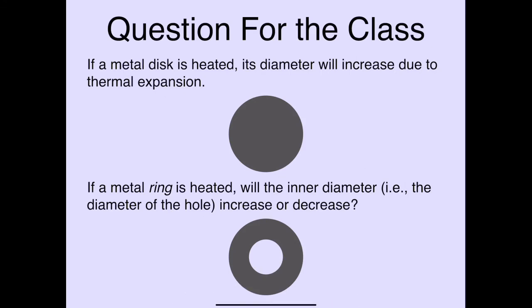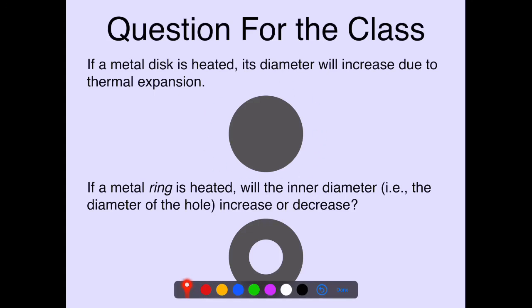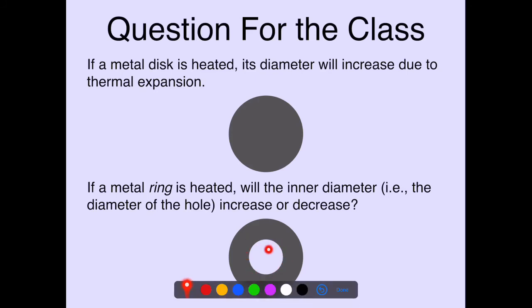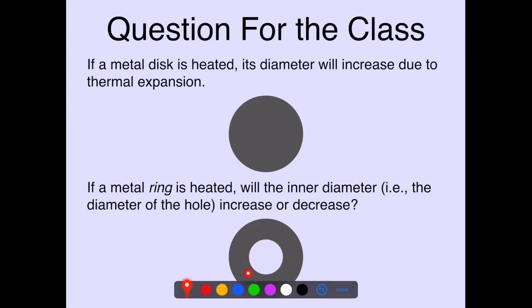Here's a conceptual question: we know that if a metal disc is heated, its diameter increases due to thermal expansion. But what if instead of a metal disc, we have a metal ring — a disc with a hole in the middle? If we heat that up, does the hole get bigger or smaller and close up? What happens to the inner diameter — does it increase or decrease? Think about this, then we'll go through it together.